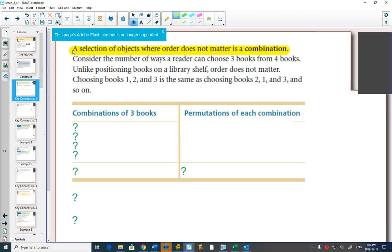So the example: consider the number of ways a reader can choose 3 books from 4 books. There's 4 books, and they say you can take 3 of them home. Well, the order's not going to matter.